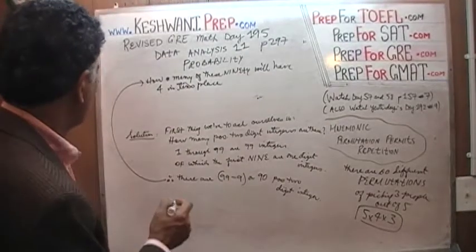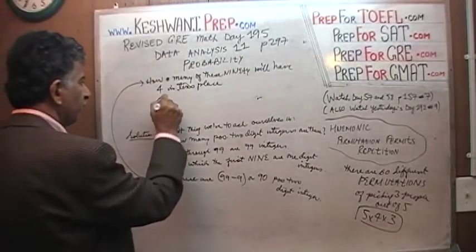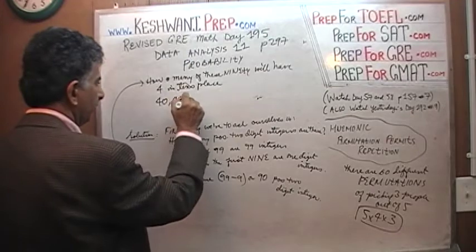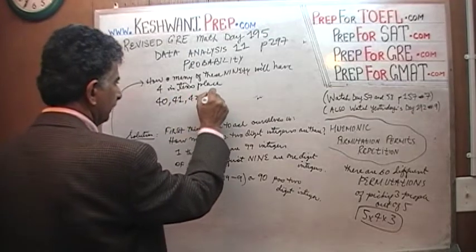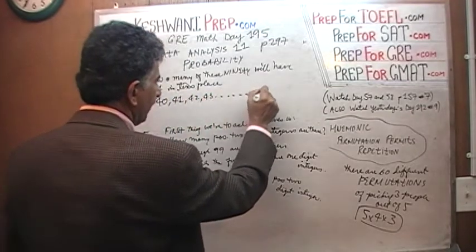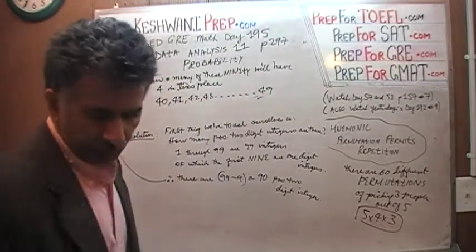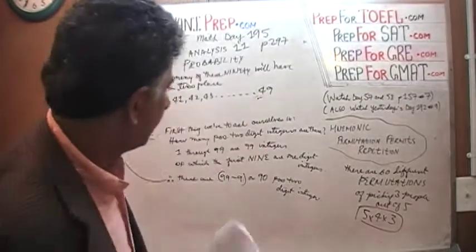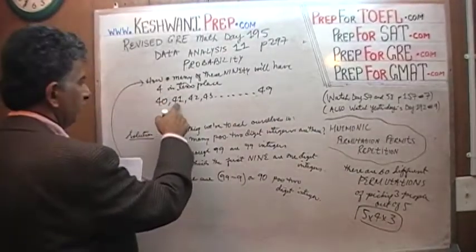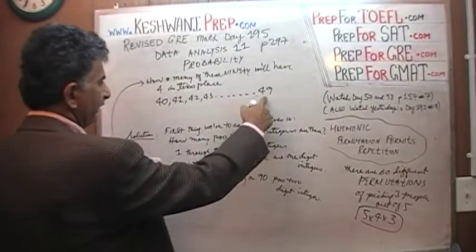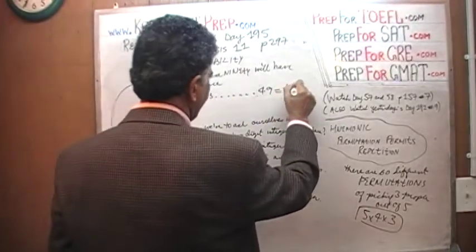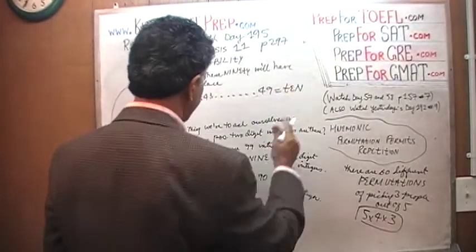We want four in the tens place, so the story begins with 40: 40, 41, 42, 43, all the way up to 49. 41 through 49 is 9, and there is 40, so there are 10 of them.